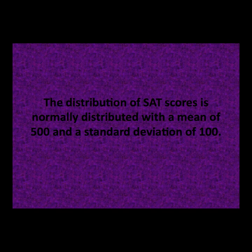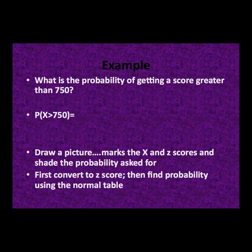Consider this example. The distribution of SAT scores is normally distributed with a mean of 500 and a standard deviation of 100. What is the probability of getting a score greater than 750 in this distribution? We write this as the probability that x is greater than 750. Note that the notation is important: capital P represents probability, x represents the raw data score, and z represents the standard score. We write this as the probability that x is greater than 750 using the greater than sign, then draw a picture marking the x and z scores and shading the probability asked for.